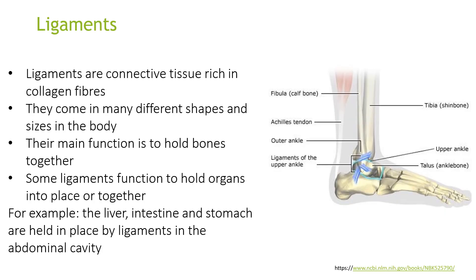Ligaments are active tissue rich in collagen fibres. They come in many different shapes and sizes in the body and their main function is to hold bones together. Some ligaments also function to hold organs in place — for example, the liver, intestine and stomach are held in place by ligaments in the abdominal cavity.